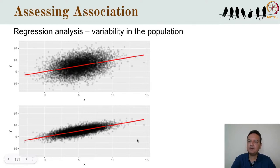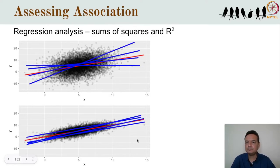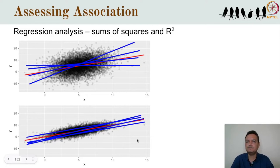To illustrate, a population relationship with high variability means each set of samples can result in quite different regression lines. With low variability, regression lines for different sets of samples are unlikely to differ much from each other. So we want to understand the precision of our estimates. We typically focus on the precision of the slope, because that is the quantity of interest in most cases, whereas the intercept is rarely of much significance in our analysis.